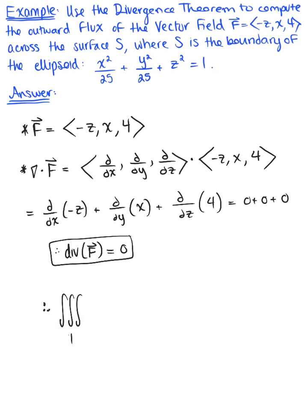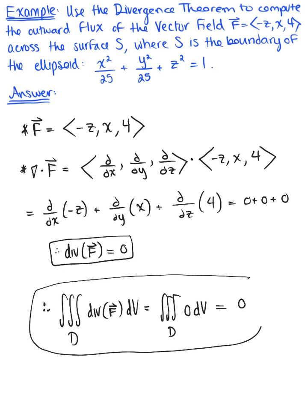We can go right ahead and say, therefore, by the divergence theorem, we have the triple integral over that solid region D. We know this is of the divergence of the vector field dV. So we have the triple integral over that solid region D of 0 dV, which will equal 0. And this is our beautiful final answer.